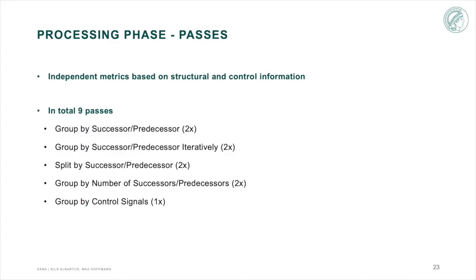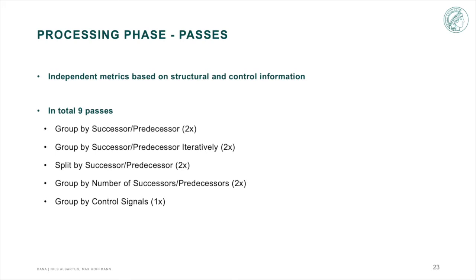In the processing phase, DANA combines nine metrics that process structural and control information while abiding to set rules. These metrics are combined with each other to create groupings. To get a better understanding of how the processing phase works, we are going to go through this step-by-step with the help of an example.